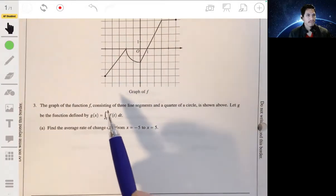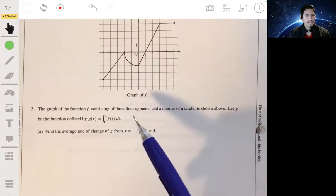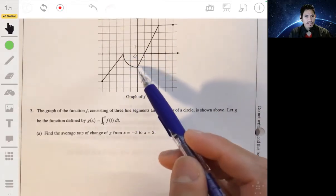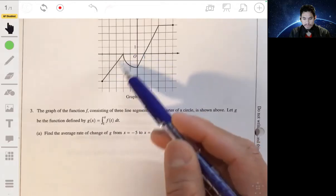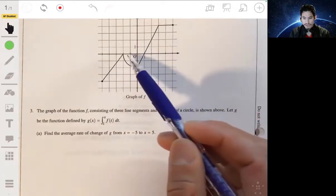All right, problem three. We have the graph of F given here, and it consists of these three line segments, straight line segments, and a quarter circle here.